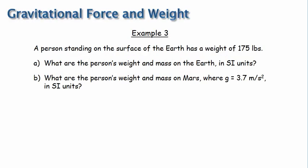To make this point, I'll work through another example. A person standing on the surface of the Earth has a weight of 175 pounds. Part A, what is the person's weight and mass on the Earth in SI units? And then part B, what is the person's weight and mass on Mars, where g is equal to 3.7 meters per second squared, again in SI units? For part A, we can get the person's weight in newtons just by doing a unit conversion.